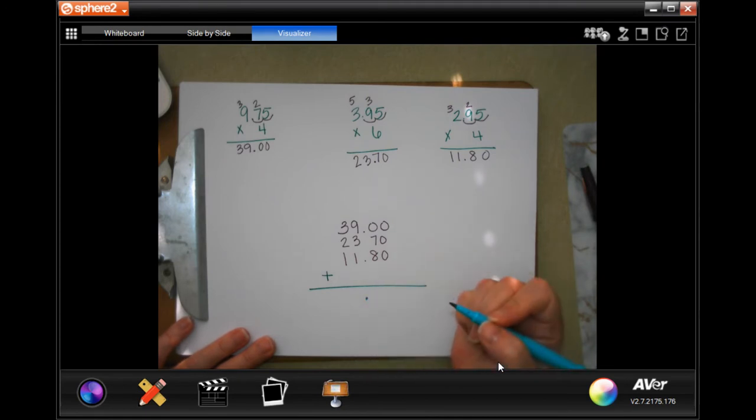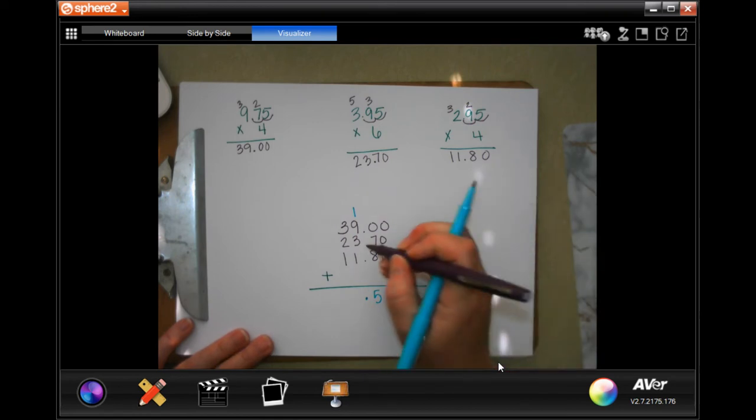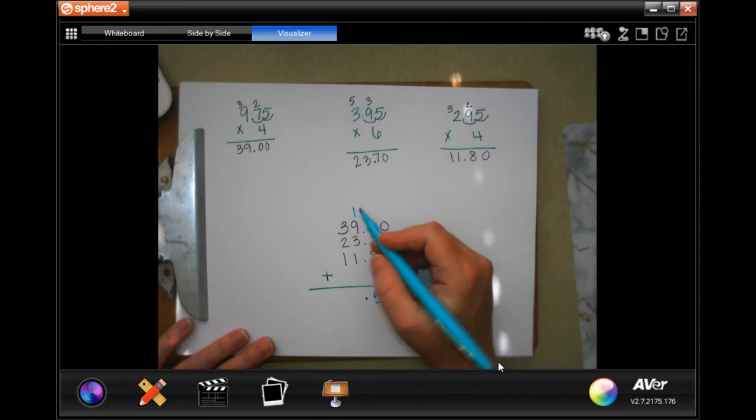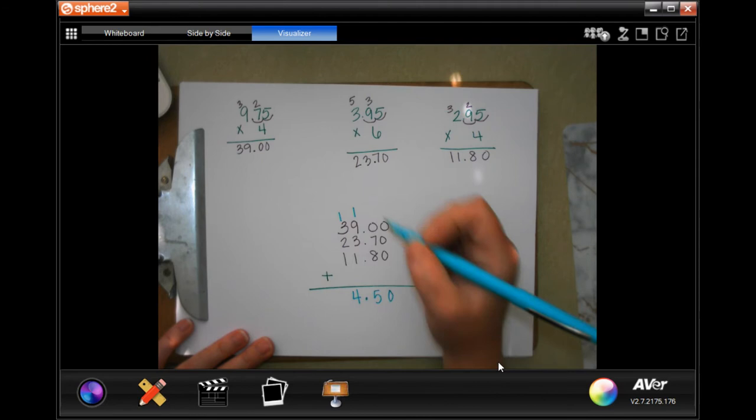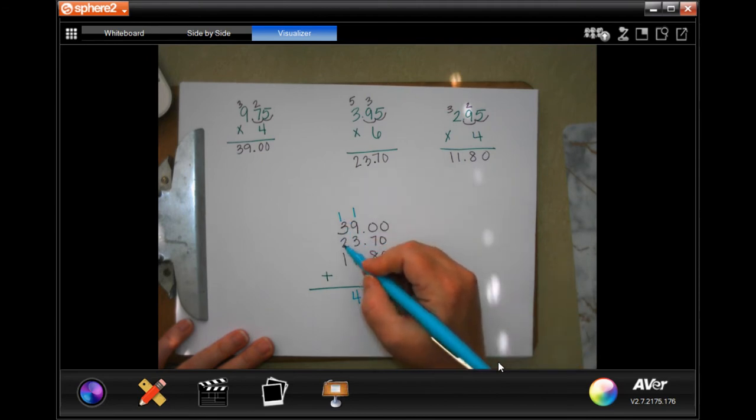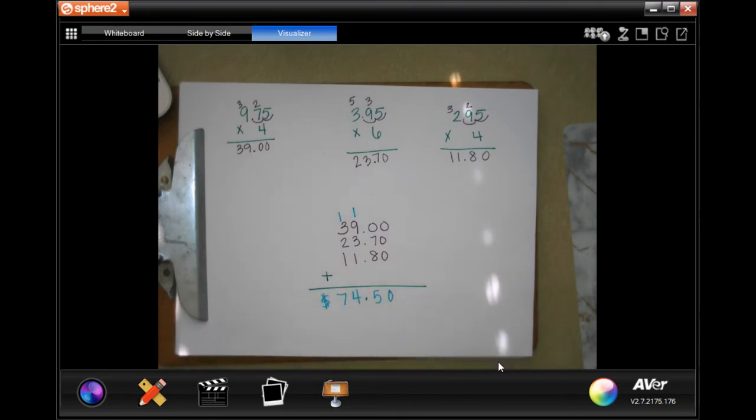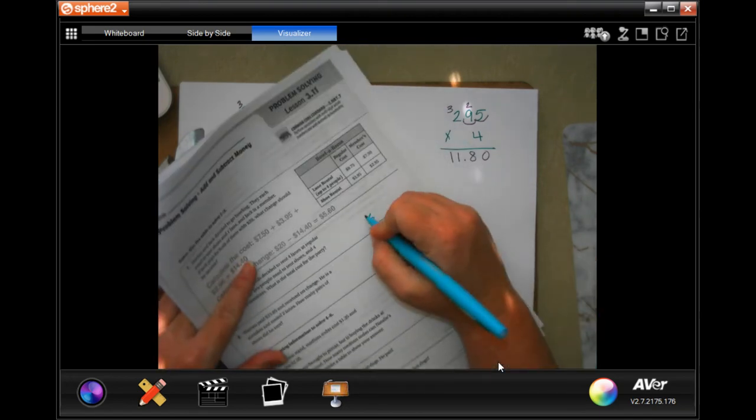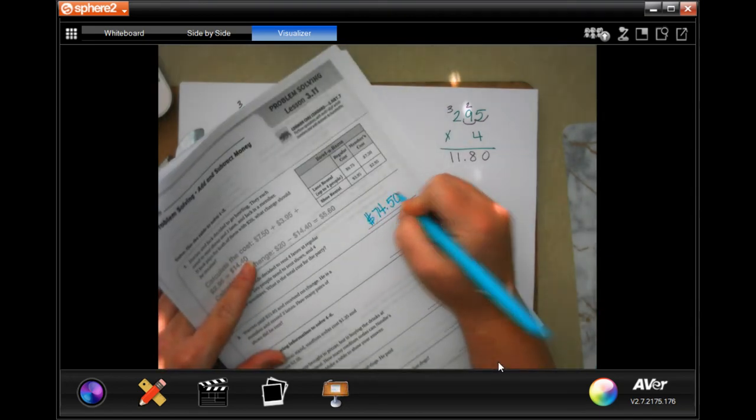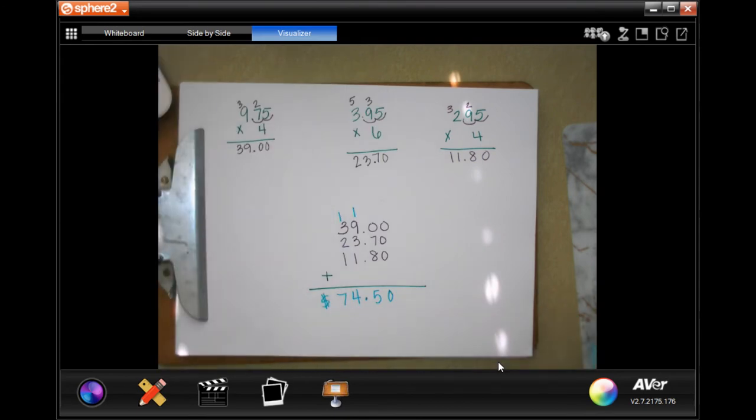Now we just need to add those up. So first, we need to drop our decimal, then add up. Those are going to be 0s. 0 plus 7 is 7, plus 8 is 15, carry the 1. Oh, I didn't add my decimal there. Look at that. Bad miss, Leah. 1 plus 9 is 10, plus 3 is 13, plus 1 is 14, carry our 1. 1 plus 3 is 4, plus 2 is 6, plus 1 is 7. And don't forget to put your dollar sign, $74.50.